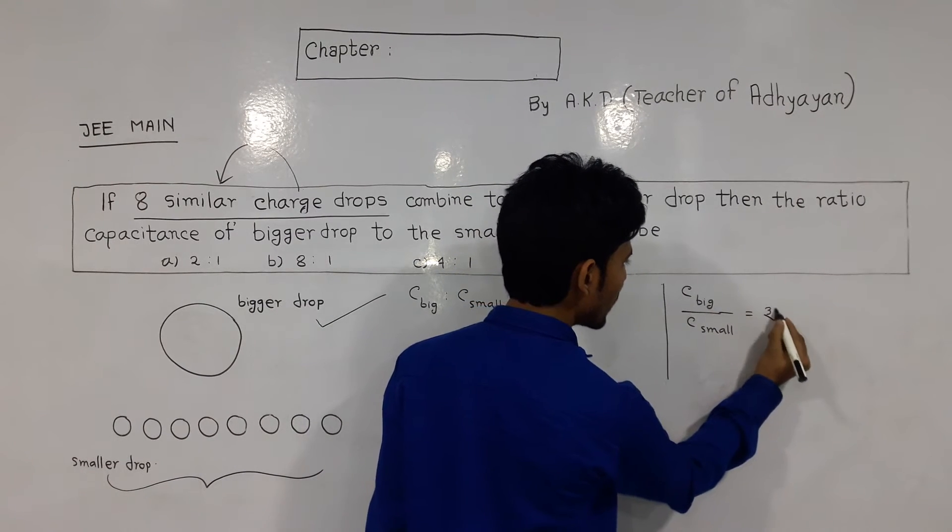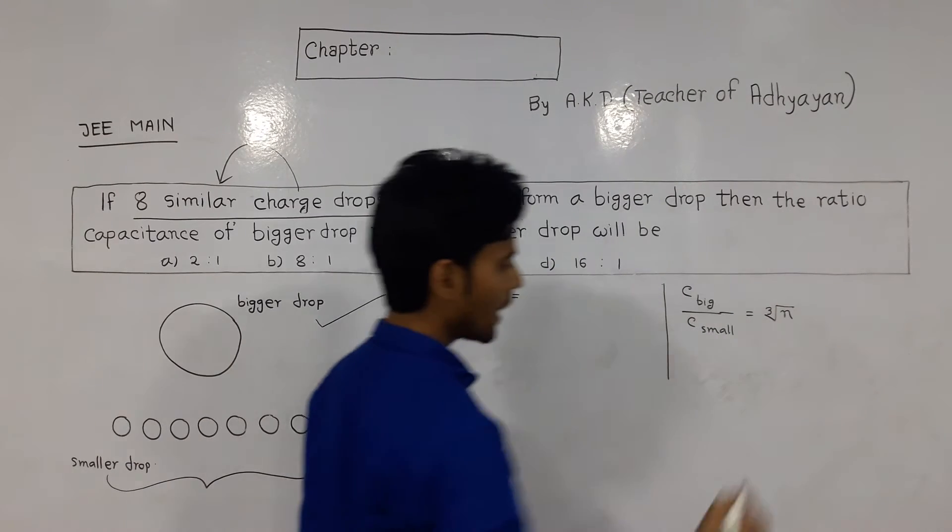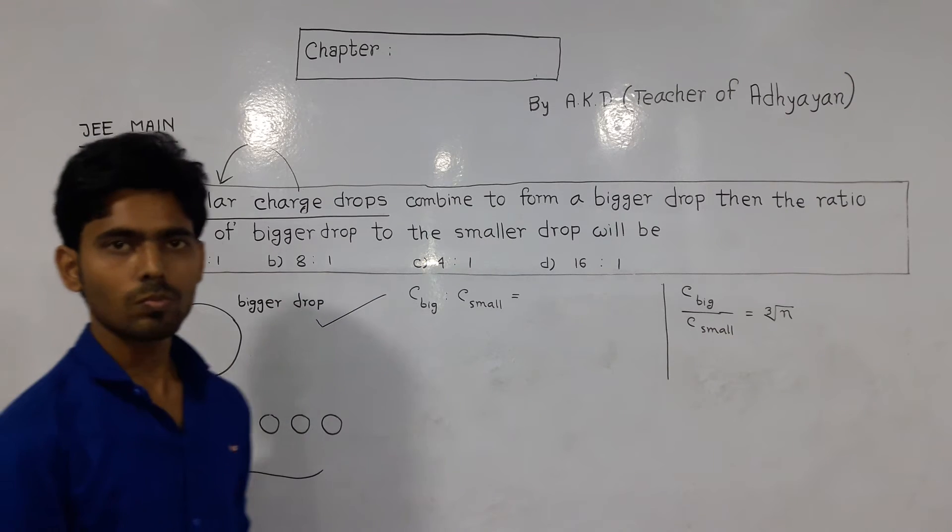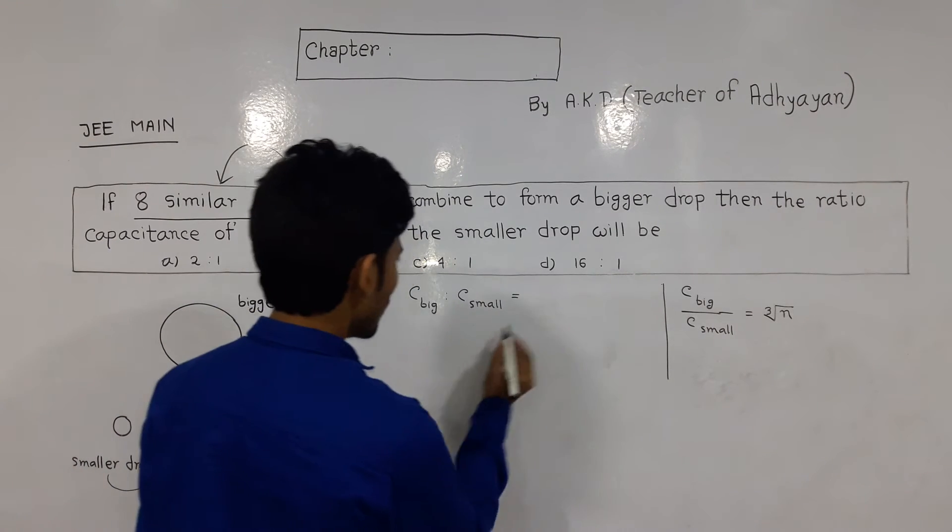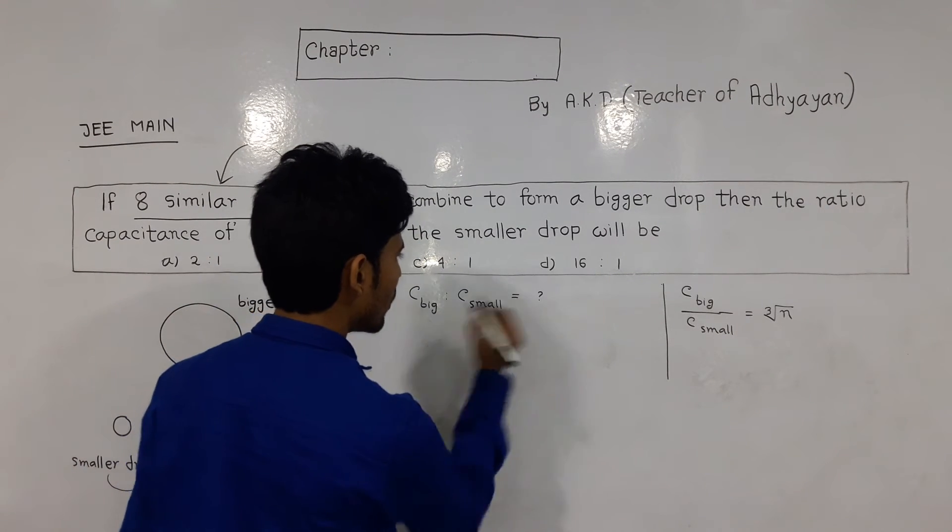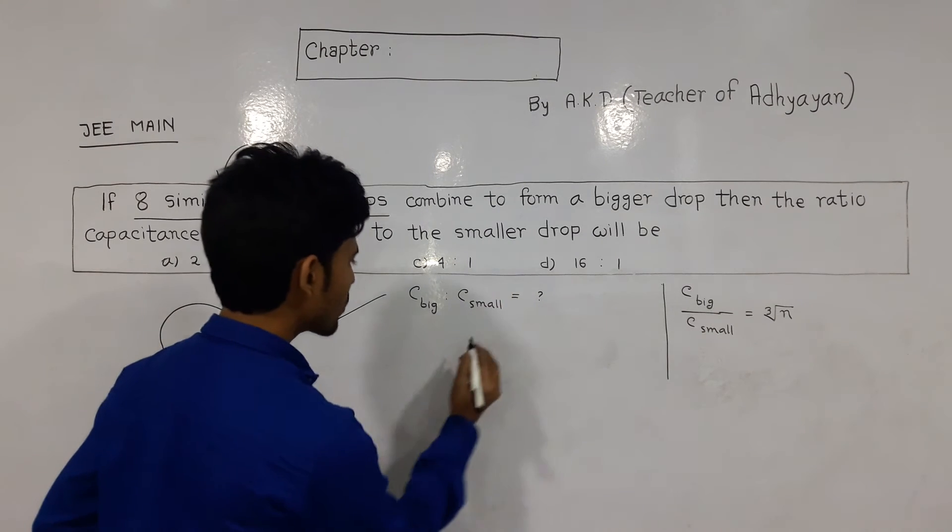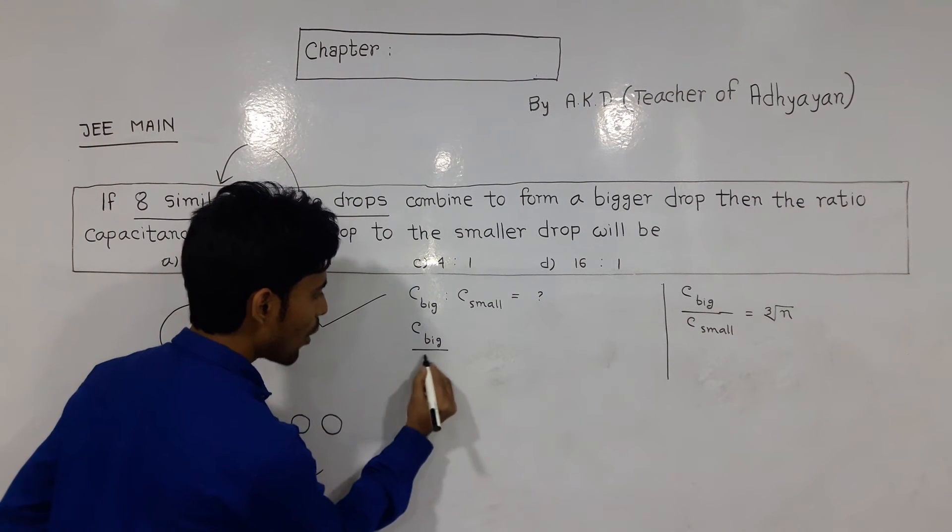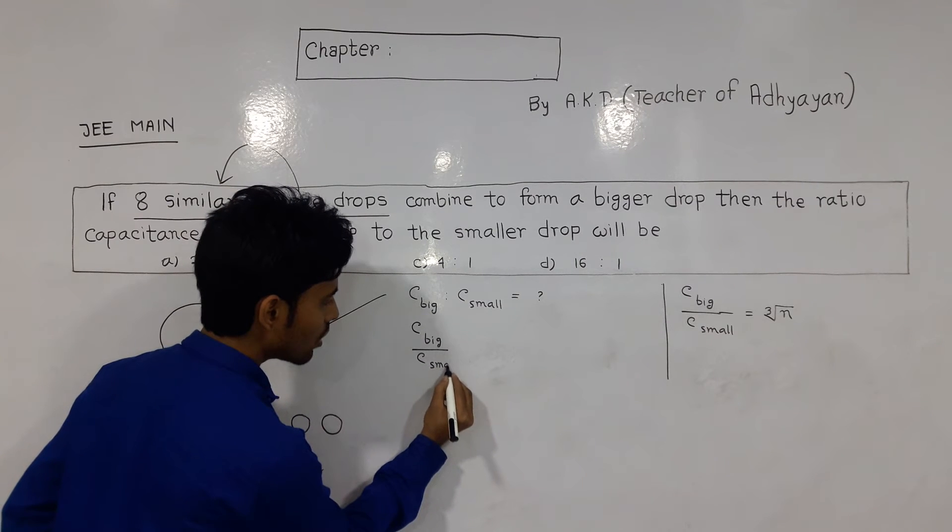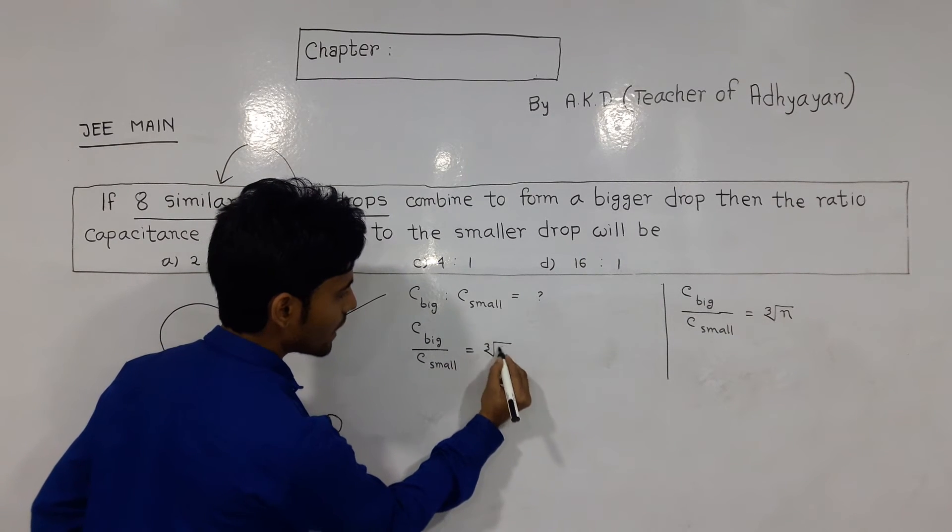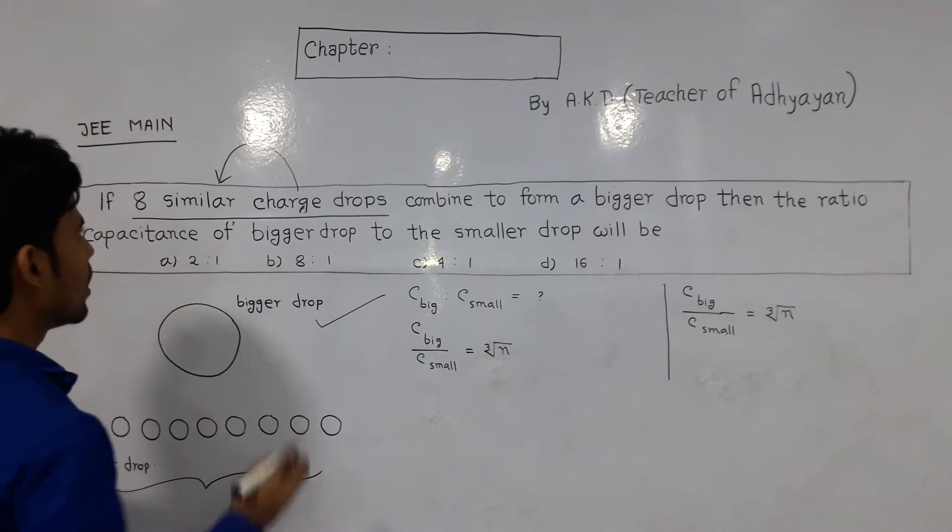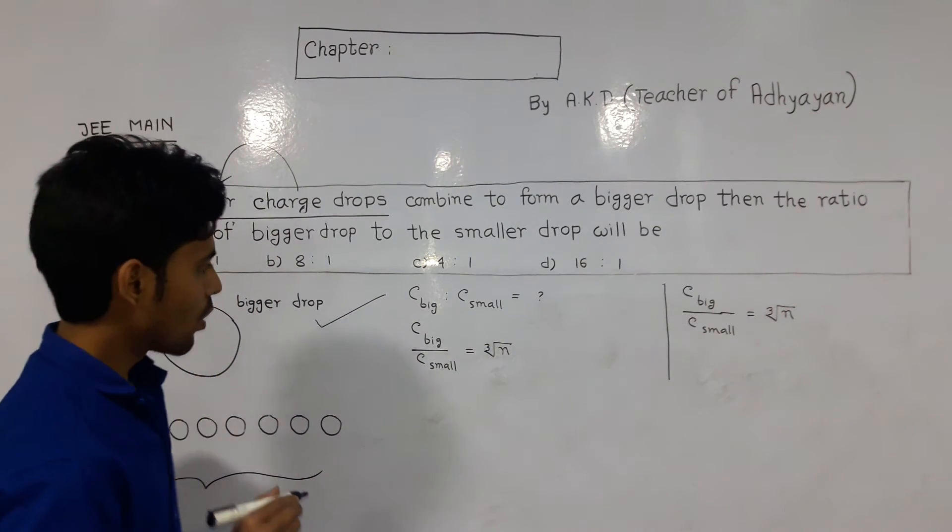The formula for this is C_big upon C_small equals cubic root n, where n is the number of smaller drops.